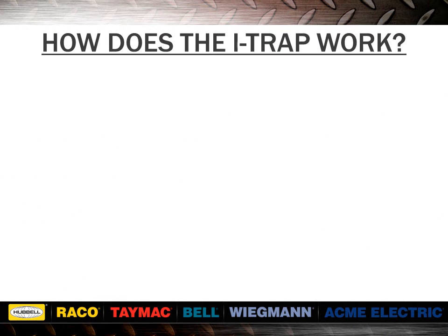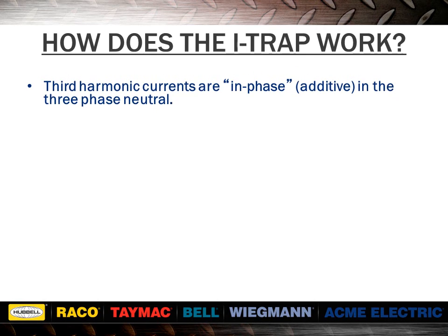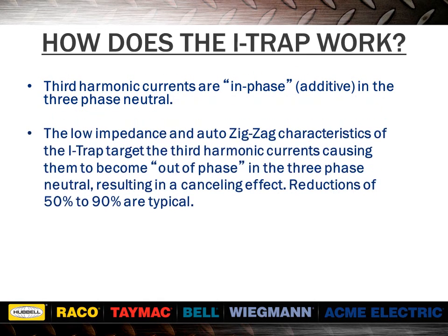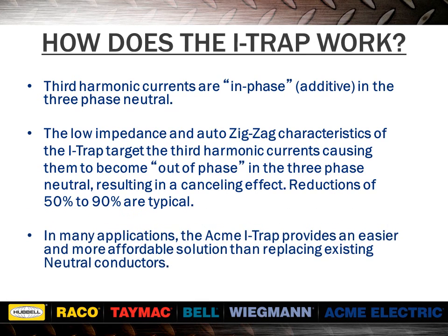How does the I-TRAP work? The third harmonic currents are in phase in the three-phase neutral. The low impedance and auto-zigzag characteristics of the I-TRAP target the third harmonic currents, causing them to become out of phase in the three-phase neutral, resulting in a canceling effect. Reductions of 50% to 90% are typical. In many applications, the ACME I-TRAP provides an easier and more affordable solution than replacing existing neutral conductors.